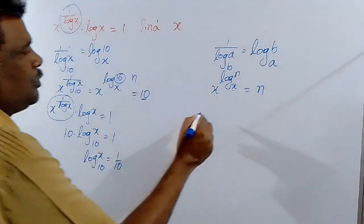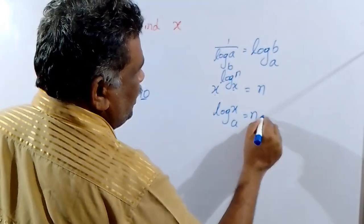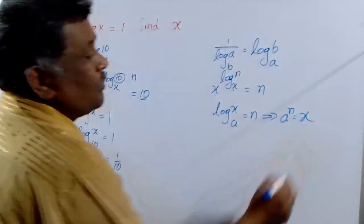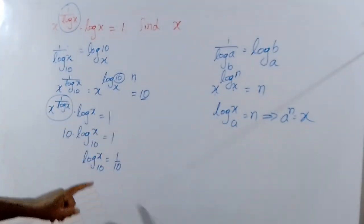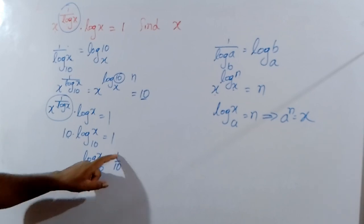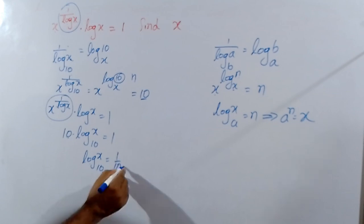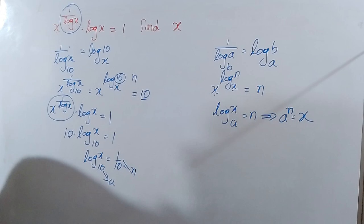Using the logarithm formula, change log x base a equal to n, implies a power n equal to x. Log x base 10, n equal to 1 by 10, then a power n is equal to x.